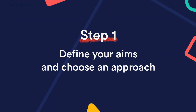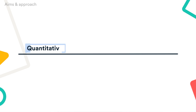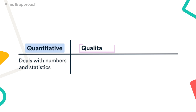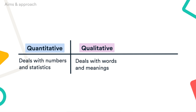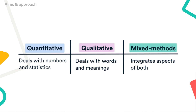First, you need to define the aim of your research. Based on this aim, you'll make a choice for your research approach. A quantitative approach deals with numbers and statistics. A qualitative approach deals with words and meanings. A mixed methods approach integrates aspects of both.